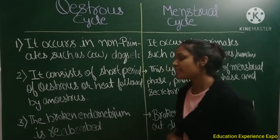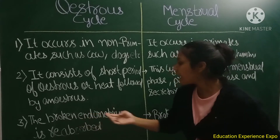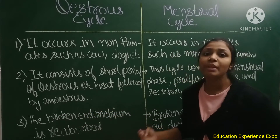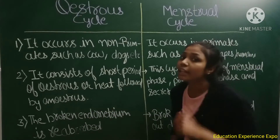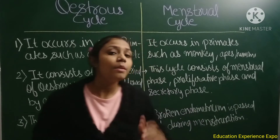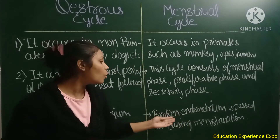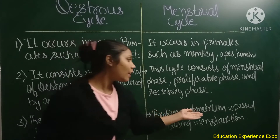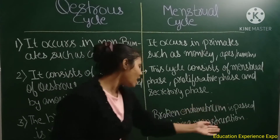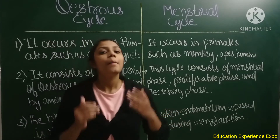In the estrus cycle, the broken endometrium is reabsorbed. Whereas in the menstrual cycle, the broken endometrium is passed out during menstruation.